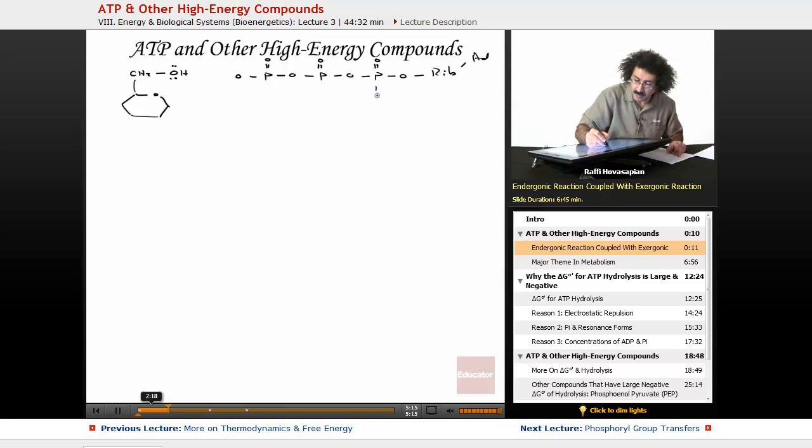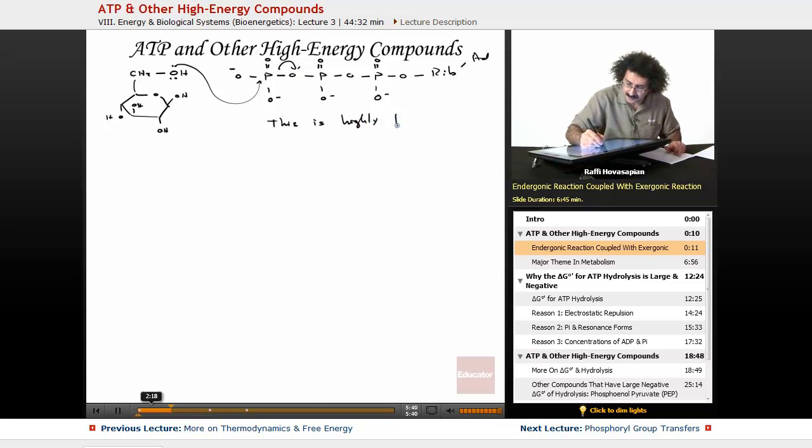The normal endergonic reaction wants to happen, but hydroxide is not a very good leaving group, so this reaction is not very likely. By providing an alternate pathway for this thing to take place, here's what happens. I'll redraw the glucose with O, P, O, P, O, P, O, and the ribose with the adenine. This is a very likely reaction, highly likely and highly thermodynamically favorable. That's all that's going on here.